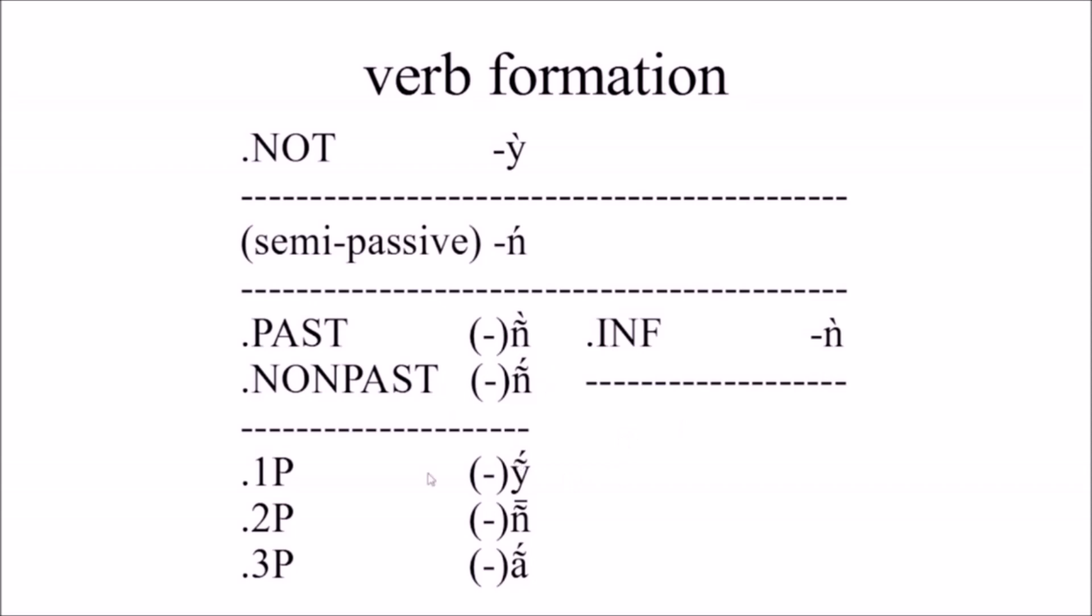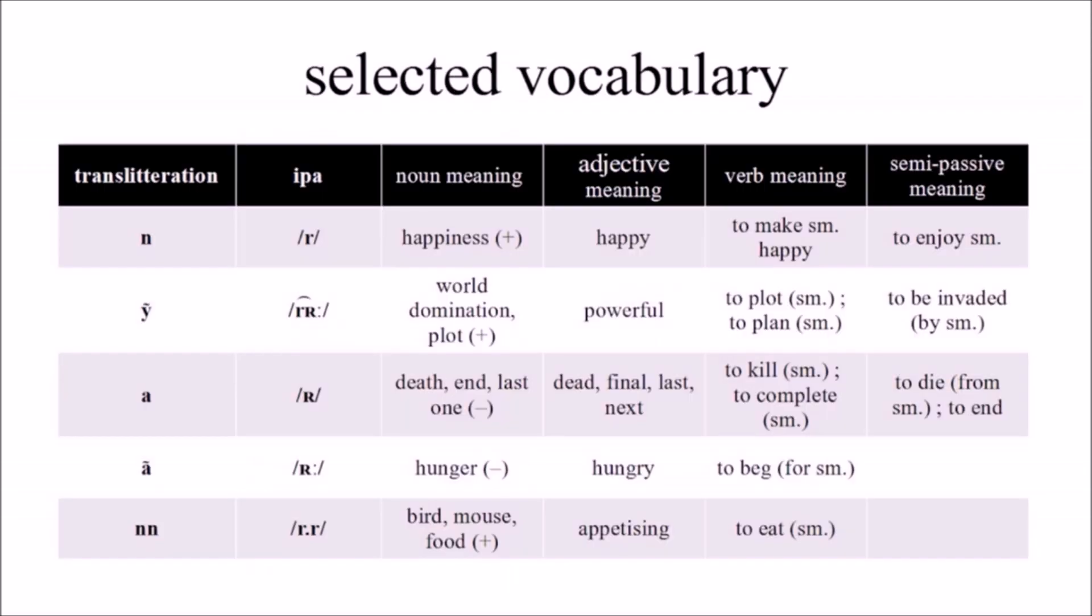And then after that, there might be first person, second person, or third person also. Except there is no singular, or dual, or plural, or whatever. It's all the same. The first person pronoun is pronounced prrr. The second person pronoun is pronounced prrr. The third person pronoun is pronounced prrr or something like that.